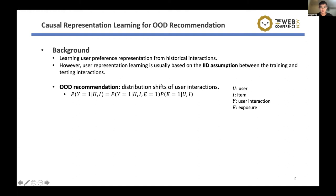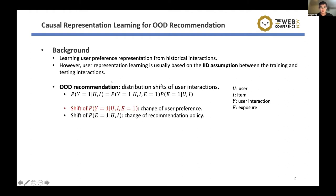This shift is decided by two factors. The first is whether this item is exposed or recommended to this user. The second factor is whether this item will affect the evolution of user interactions. The evolution can occur for two reasons: one is the shift of the user preference, and another is the change of the recommendation policy.